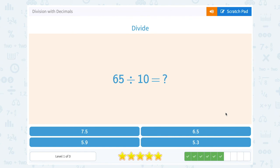65 divided by 10. We're looking for the answer choice where it's one place value smaller, to divide by 10. That would be 6.5.